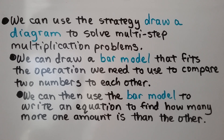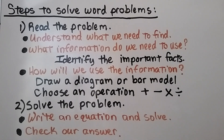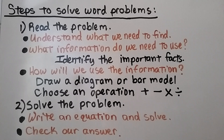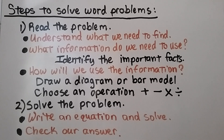We can then use the bar model to write an equation to find how many more one amount is than the other. Remember the steps to solve word problems. First, read the problem and understand what we need to find and what information to use. Identify the important facts. Then decide how to use the information — draw a diagram or bar model, and choose an operation: addition, subtraction, multiplication, or division. Then solve the problem by writing an equation, and check your answer to make sure the math is correct.